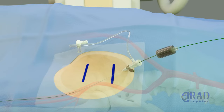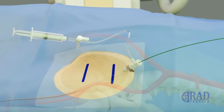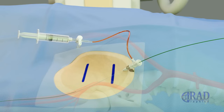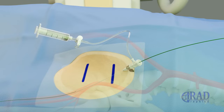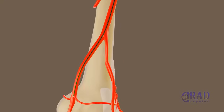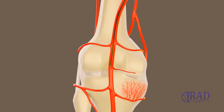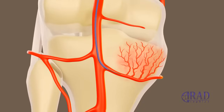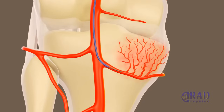The dilator of the vascular sheath is removed, and the sheath is aspirated and flushed with heparinized normal saline. An angled catheter is advanced over the wire, through the sheath, and into the distal superficial femoral artery near the adductor canal. The wire is then removed and an angiogram is performed to identify the genicular arteries contributing to inflammation in the knee joint. A combination of microcatheter and microwire is advanced through the base catheter to select the target genicular arteries.